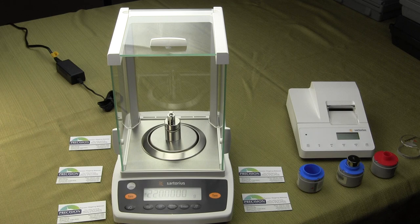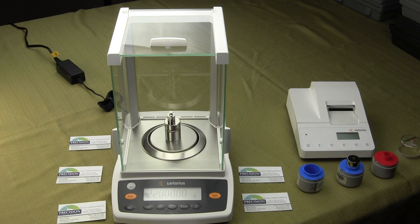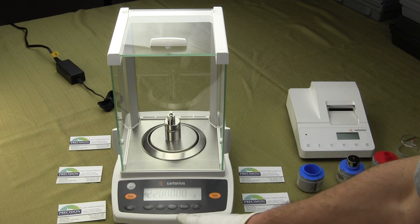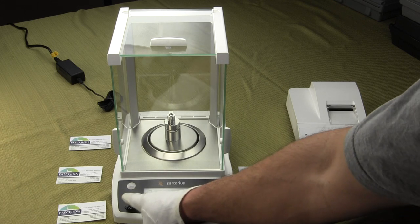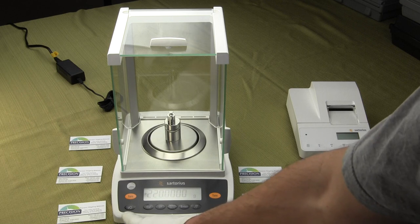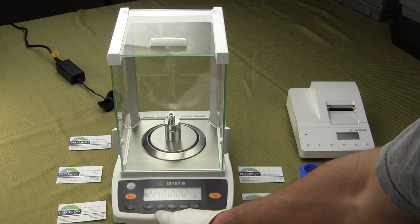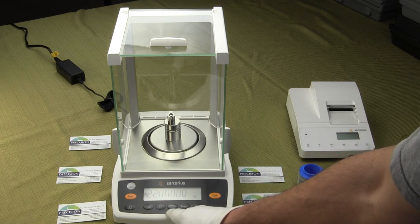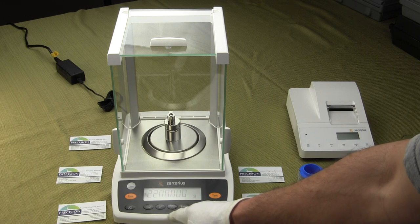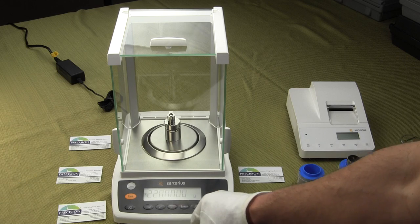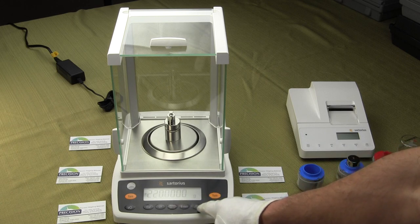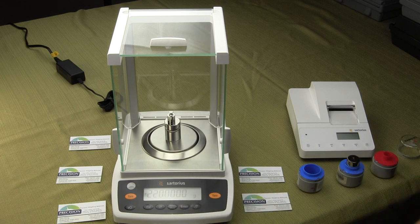The functionality of the balance is the same as the ED and GK models. Same tactile keypads here, same exact functionality of each key. You have a right and left tare button, an on-off switch, a CAL button, a clear function. This is your select menu to get into the menu functionality of the balance, the enter button for entering the configuration, and on the right-hand side is the print key.